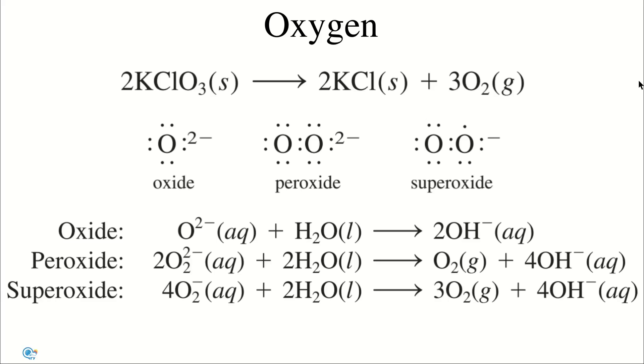In laboratory, oxygen gas can be obtained by heating potassium chlorate. The reaction is usually catalyzed by manganese dioxide.